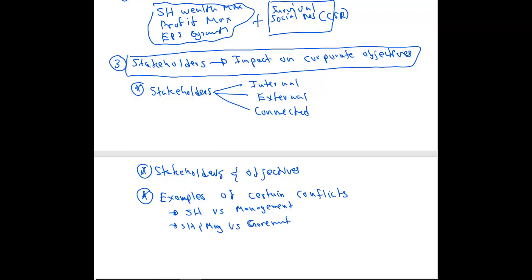Another conflict can be shareholders versus employees. Shareholders need higher profits, but employees might need higher salaries and pay. If salaries increase, expenses increase; if expenses increase, profits decrease; and if profits decrease, the amount shareholders can get will be reduced. So you should know certain examples of conflicts between the objectives of different stakeholders.